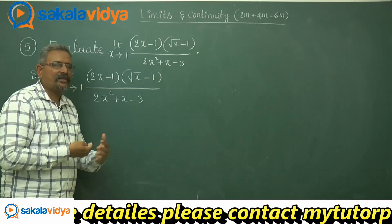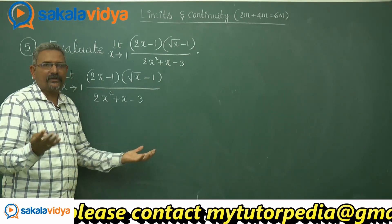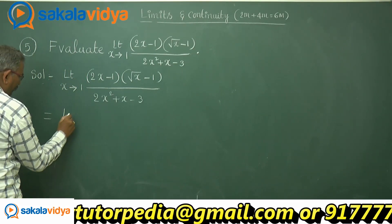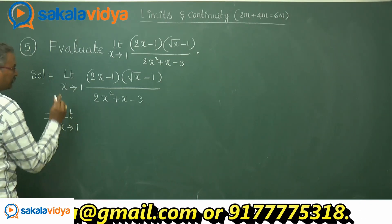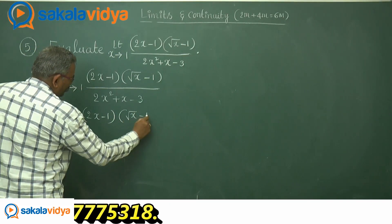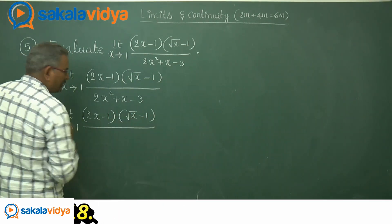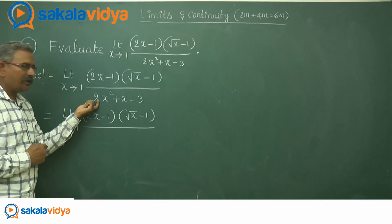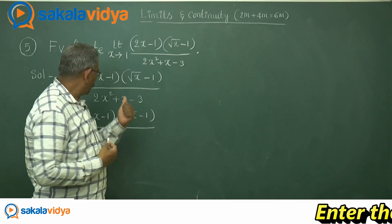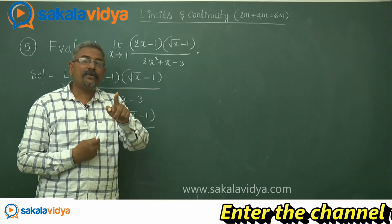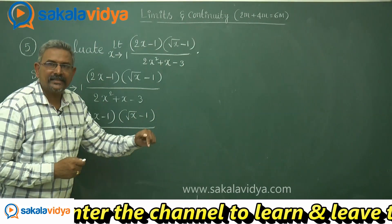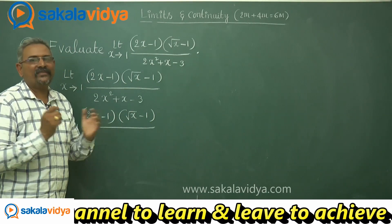We need to find the common factor so it gets cancelled and we can find out the limit. The denominator is 2x² plus x minus 3. Here minus 3 into 2 is minus 6. The factors of minus 6 are minus 3 into 2 or 3 into minus 2. Since 3 plus minus 2 equals plus 1, the x term can be written as plus 3x minus 2x. Then easily we can factorize the denominator.